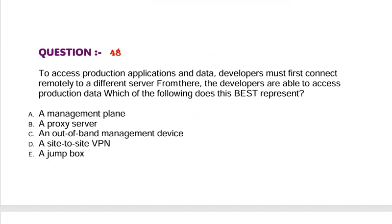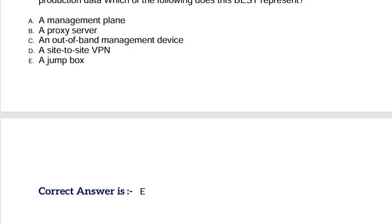Question: To access products, applications, and data, a developer must first connect remotely to a different server. From there, the developers are able to access products and data. Which of the following does this best represent? Option A, a management plane. Option B, a proxy server. Option C, an out-of-band management device. Option D, a site-to-site VPN. Option E, a jump box. Correct answer is Option E.